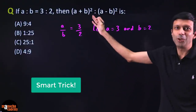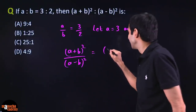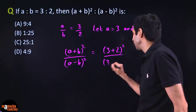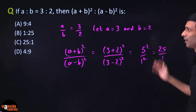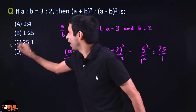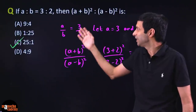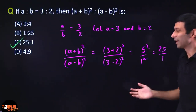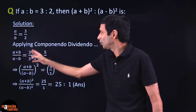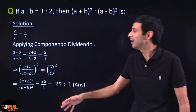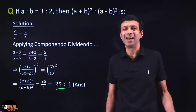Just substitute into (a + b)² / (a − b)²: that's (3 + 2)² / (3 − 2)² = 5² / 1² = 25 to 1. The correct answer is 25 to 1. If you had used componendo dividendo, you'd get (a + b)/(a − b) = 5/1, then square it for the same answer. But substituting directly with a = 3 and b = 2 is much faster.